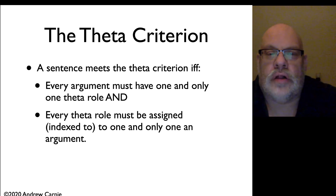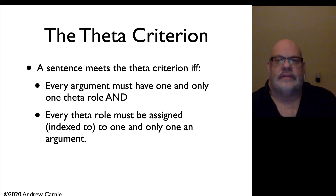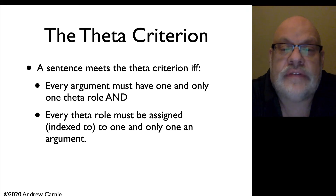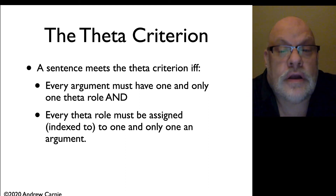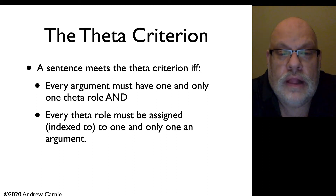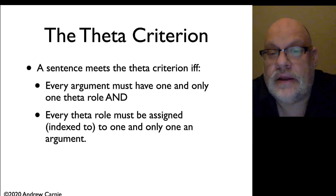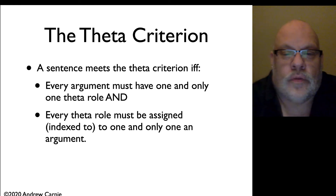The last thing we have is what's called a constraint, and this particular constraint is called the theta criterion. The theta criterion is like a kind of filter — it acts to throw out sentences that are bad. The conditions the theta criterion puts on sentences is that they meet the theta criterion if and only if: every argument must have one and only one theta role, and every theta role is assigned. This is a fancy way of expressing that one-to-one correspondence — it makes sure every argument has a theta role and every theta role is assigned to an argument.